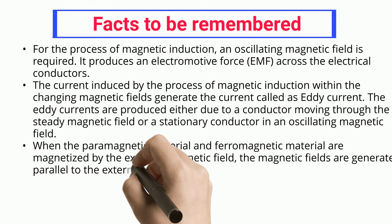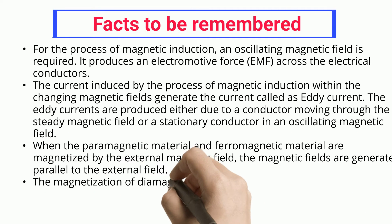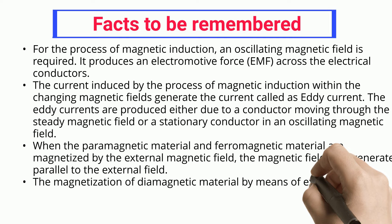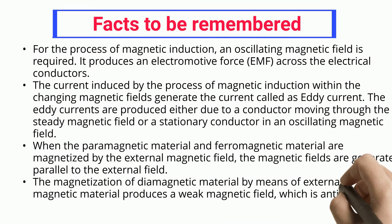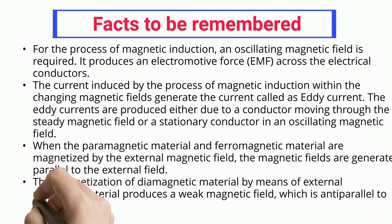When paramagnetic material and ferromagnetic material are magnetized by the external magnetic field, the magnetic fields are generated parallel to the external field. The magnetization of diamagnetic material by means of an external magnetic field produces a weak magnetic field, which is anti-parallel to the external magnetic field.